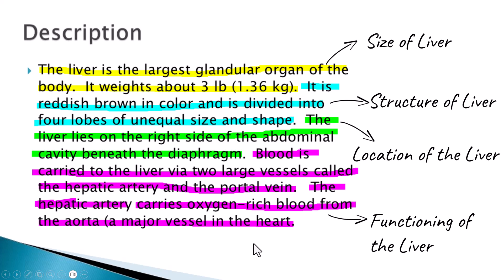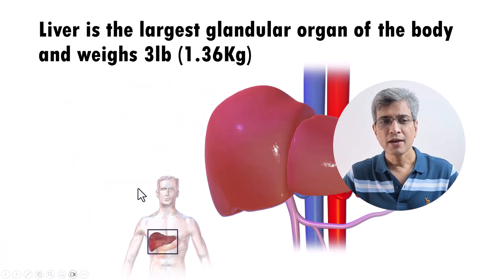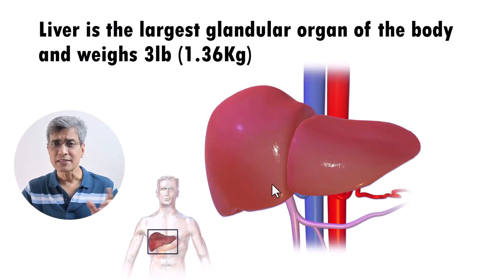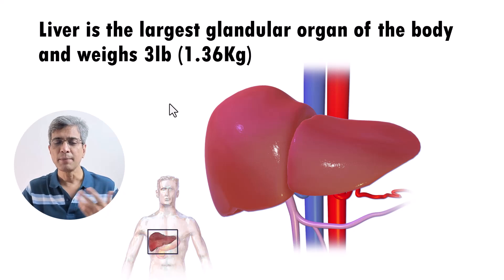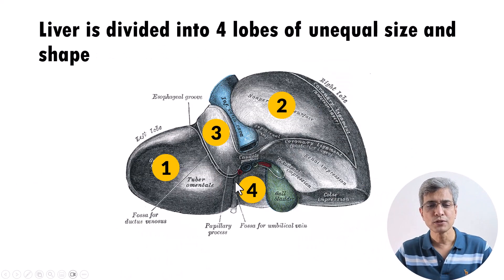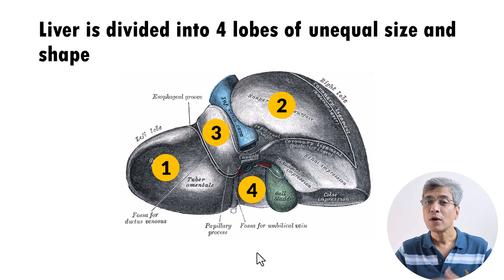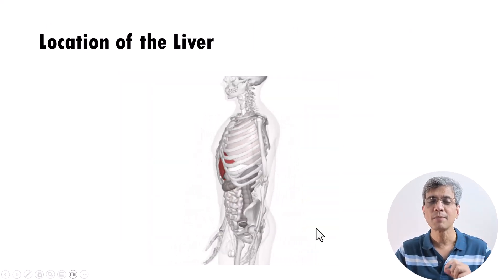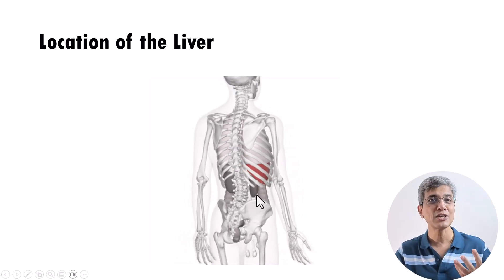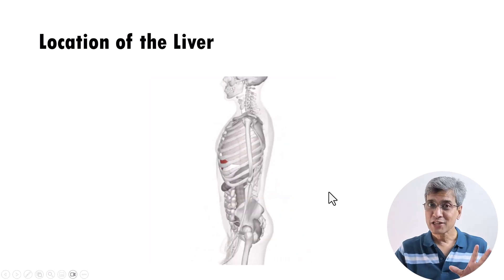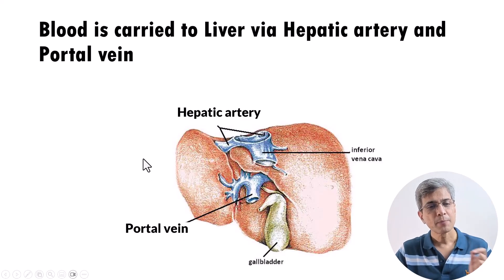Now take a look at the benefit of putting each of those points in its own slide. Here is the first slide — it says liver is the largest glandular organ of the body and weighs three pounds, with a beautiful visual that supports the point. The second point says liver is divided into four lobes of unequal size and shape, and you can see the four divisions. The third point is about the location of the liver, with a 3D visual clearly showing where the liver is placed in the body. The fourth point says blood is carried to the liver via the hepatic artery and portal vein, with a supporting visual.